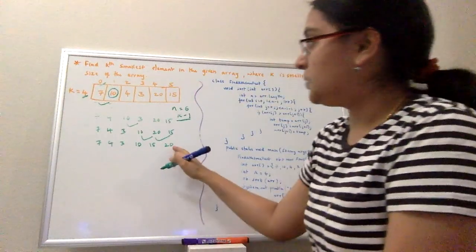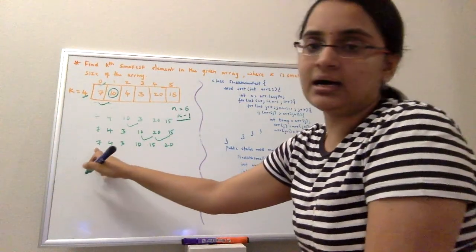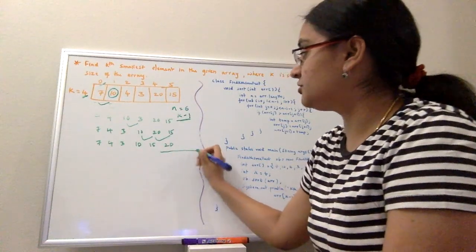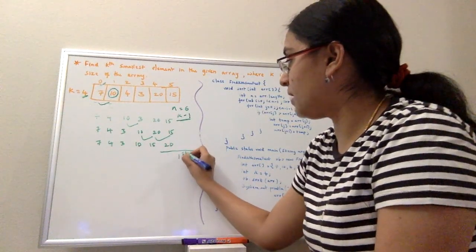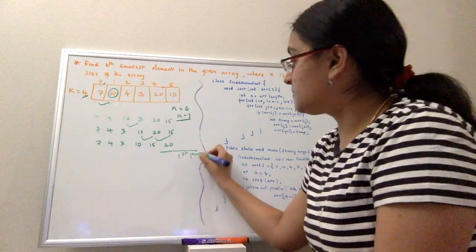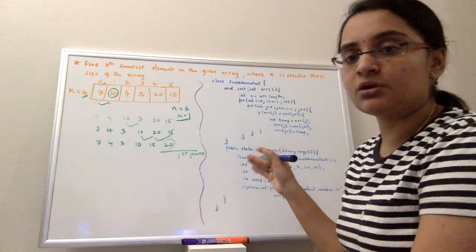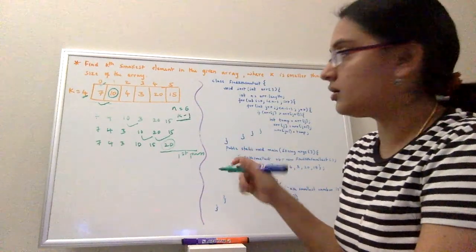If you look at this array, 20 is the largest element in the array. By the end of one complete iteration, which is called a pass, the largest element will be at its correct position, at the last, because we are trying to sort it in ascending order.